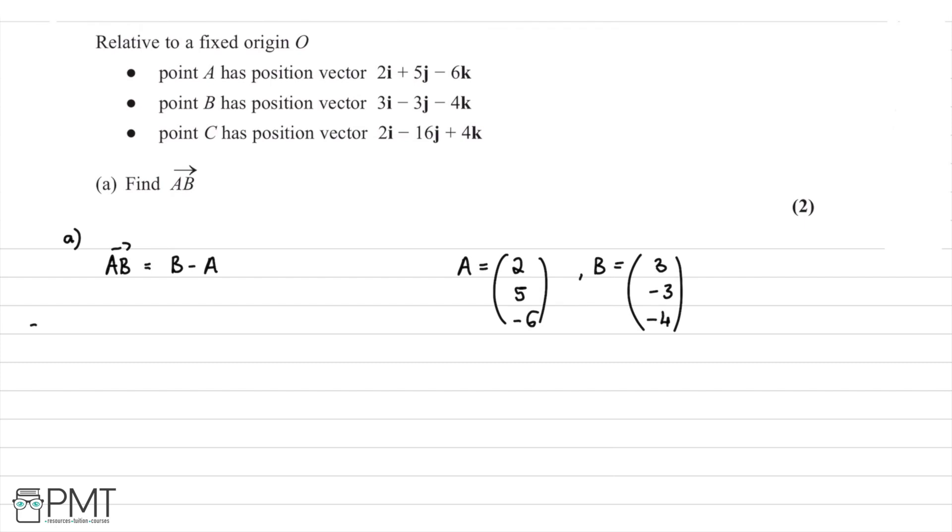Therefore, we can say that vector AB is going to be equal to our vector B minus our vector A. So we'll have 3, minus 3, and minus 4 in brackets, and then we're going to subtract A, which is 2, 5, and negative 6. So then now we just do the subtraction of each line.